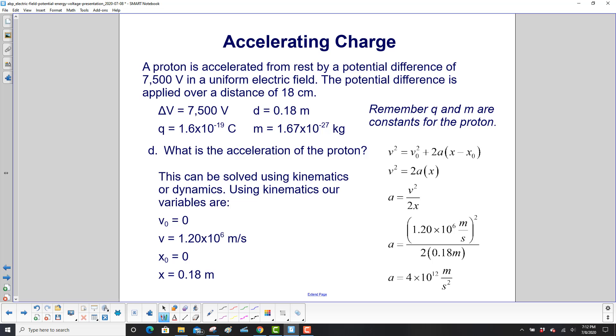Kinematics time. We want to find the acceleration of the proton. Well, we're at rest. So V0 is equal to zero. We have the final velocity that we calculated. And we're going to say we start at x0 equals zero. And then we traveled 18 centimeters or 0.18 meters.